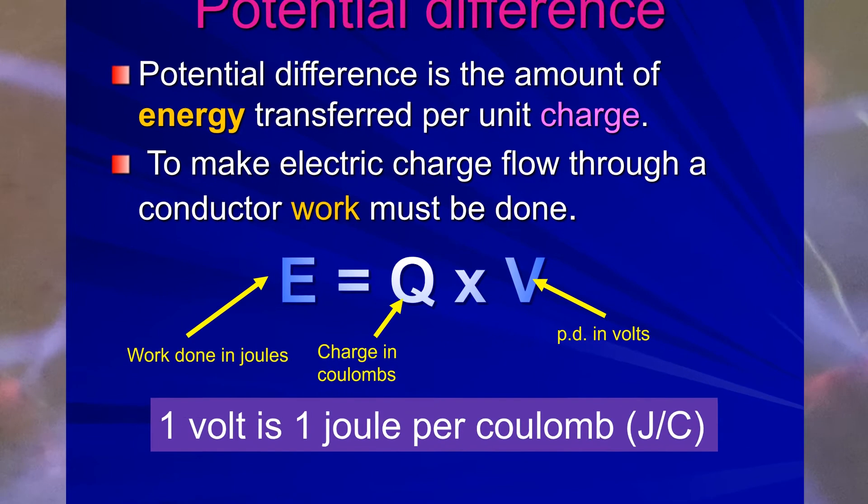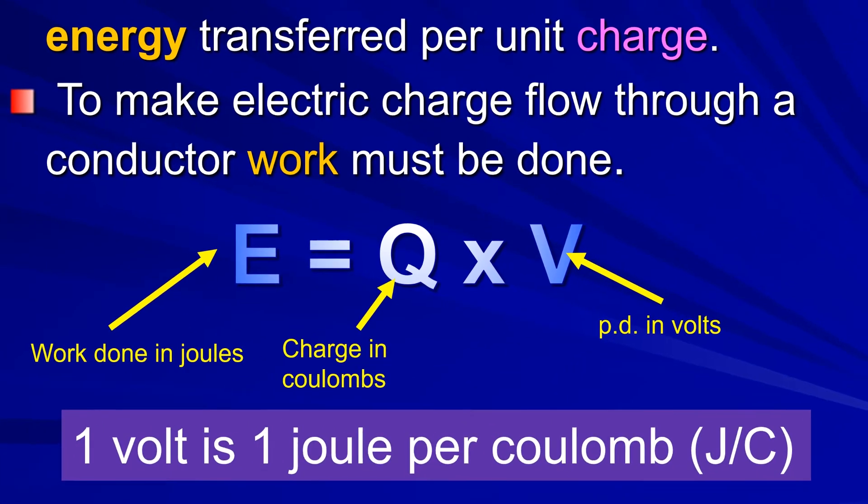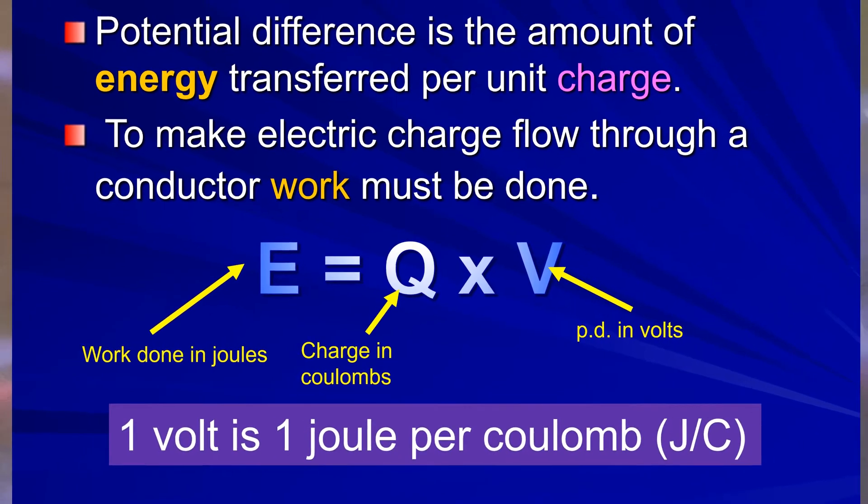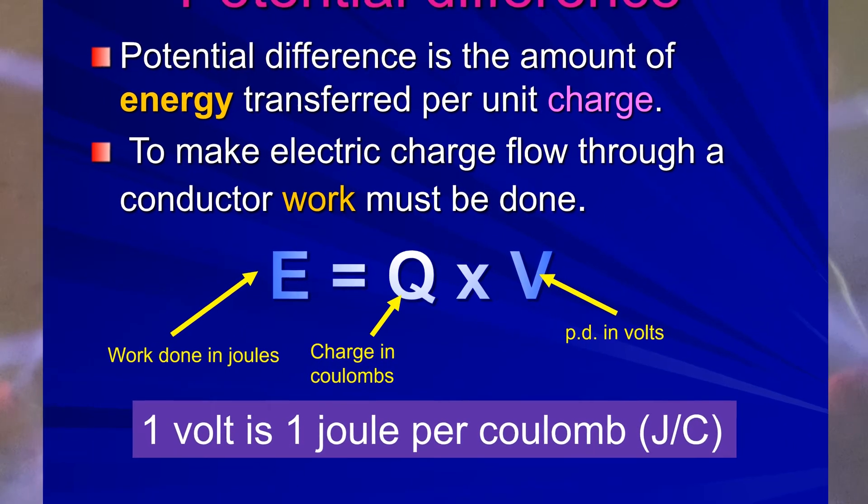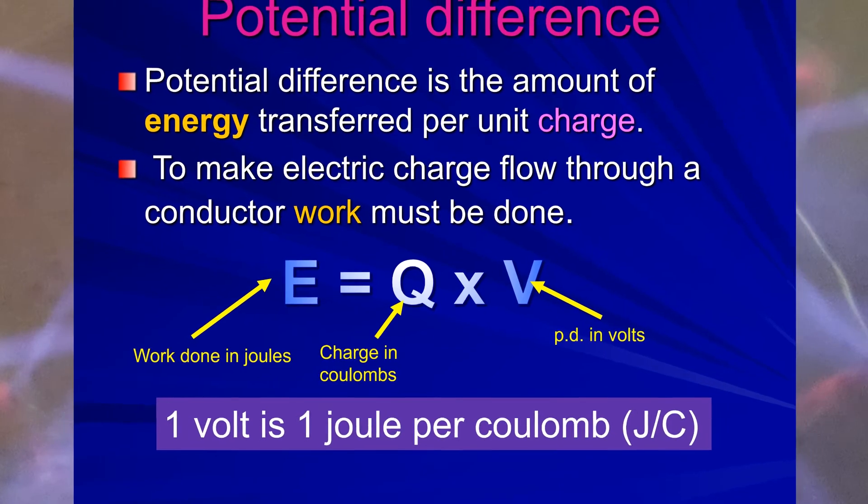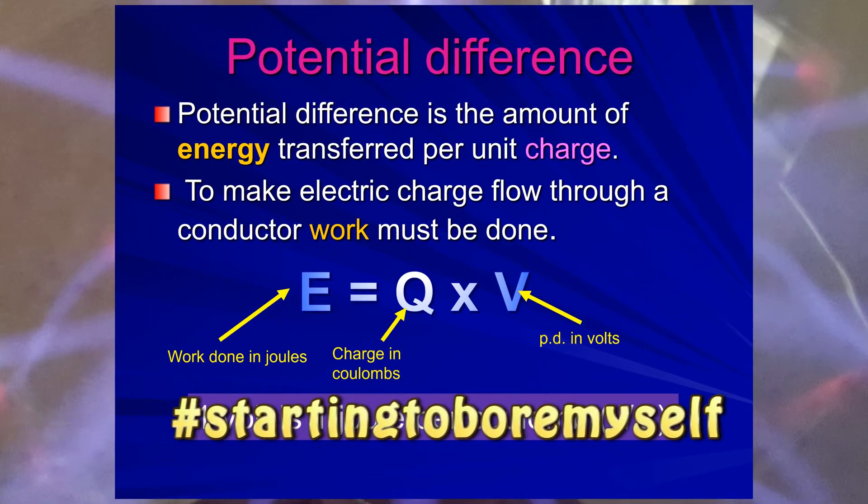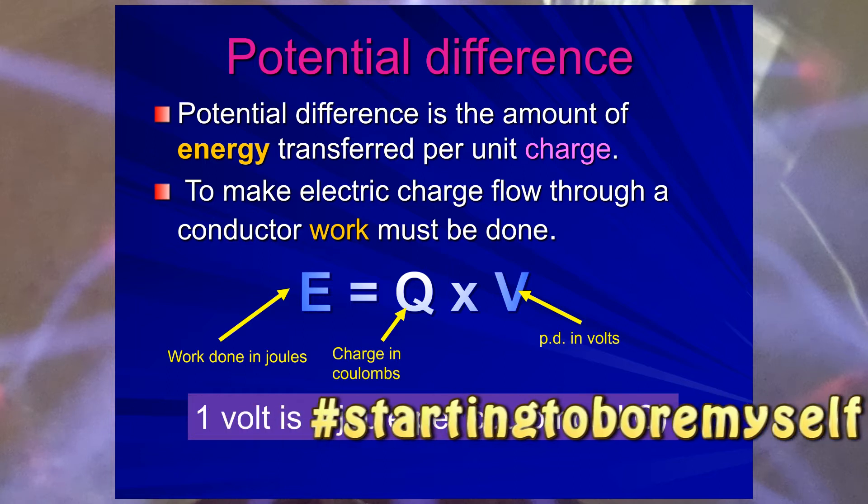The exam boards give you the equation in this form, however. E, standing for work done, remember, work done is energy transferred, plain English, equals Q times V. That's how they give it to you. But I prefer to remember it as V equals E, work done over charge. So, one volt is one joule per Coulomb. If you have 230 volts for the mains, that would be 230 joules transferred by every Coulomb of charge, as it passes between two points. That's what it means.